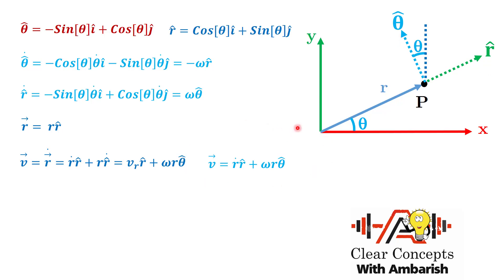The velocity expression is quite intuitive. Now the acceleration is less intuitive, but we can do the math. To differentiate the velocity vector, I'll use the product rule for three functions: the derivative of (a·b·c) = a dot·b·c + a·b dot·c + a·b·c dot. For the term omega r theta cap, its time derivative is: omega dot times r theta cap + omega times r dot theta cap + omega times r times theta cap dot.